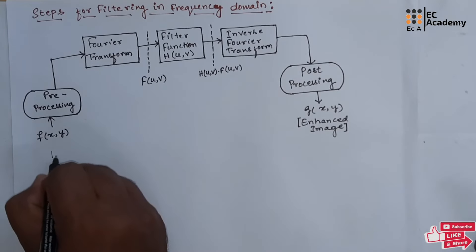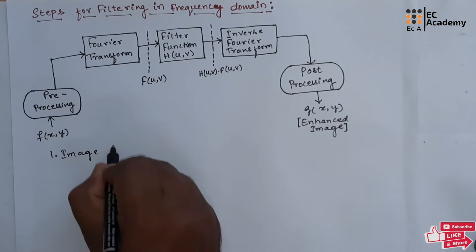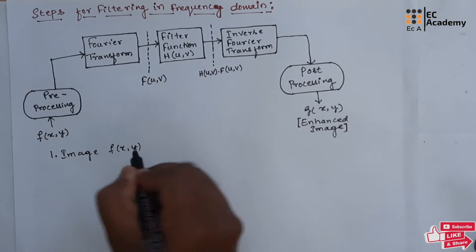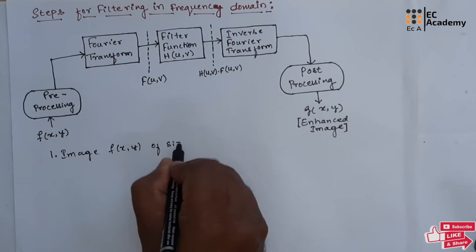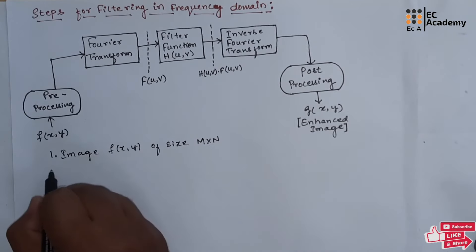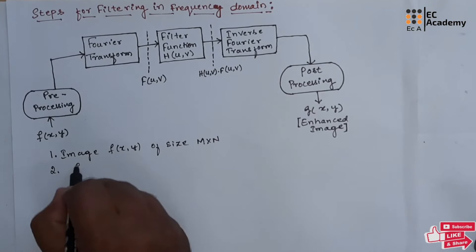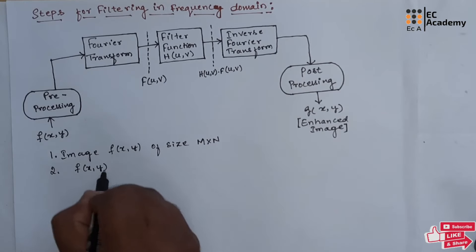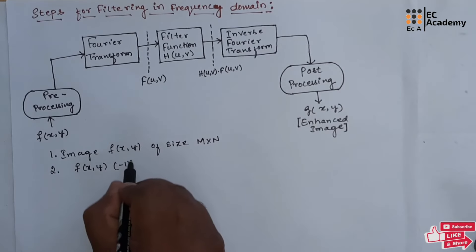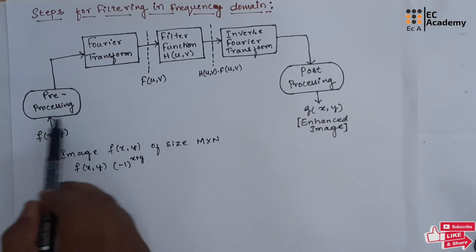In the first step, we will take the image f of x, y of size m cross n. In the second step, to centralize this image, we will multiply the image f of x, y with the value minus 1 to the power of x plus y. This work is known as pre-processing.